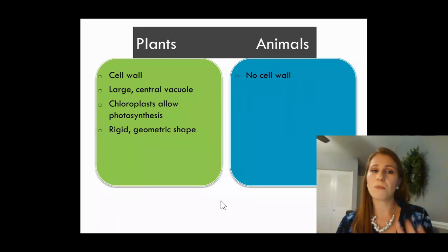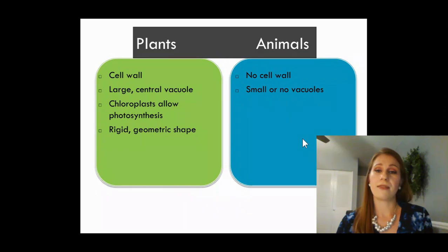And animals' cells are pretty much the opposite. They have very, very similar things. They both have lots of organelles, but they do not have a cell wall. They have really small or no vacuoles.